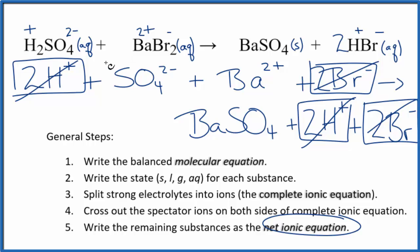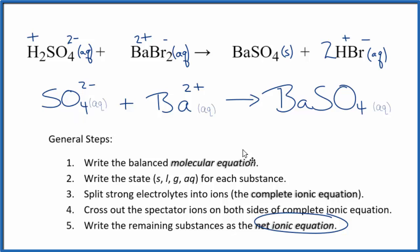I'll clean this up and write the states in. So this is the balanced net ionic equation for sulfuric acid and barium bromide. If you look at it, we have a 2 minus and a 2 plus. That adds up to zero.